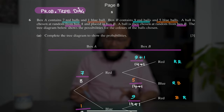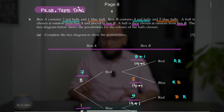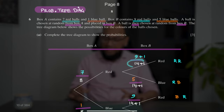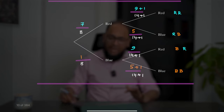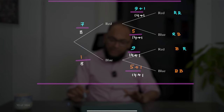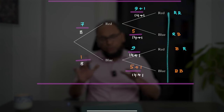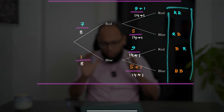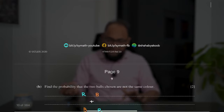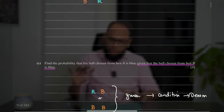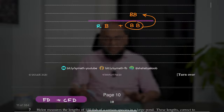Question 6 involves a probability tree diagram — carefully tracking numerators and denominators through the branches. Full colour has been used here for explanation purposes. When studying, use different colours to understand concepts better, though obviously only black or blue pen is allowed in the exam.